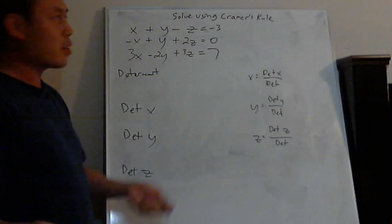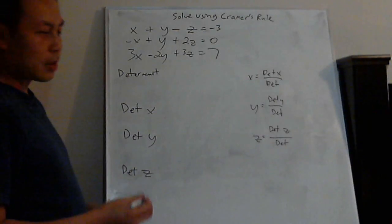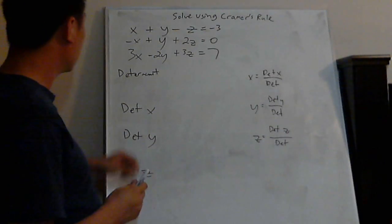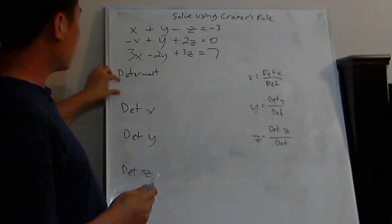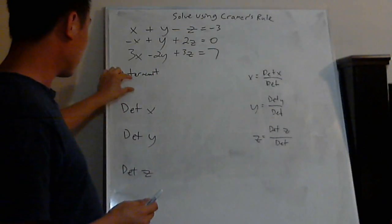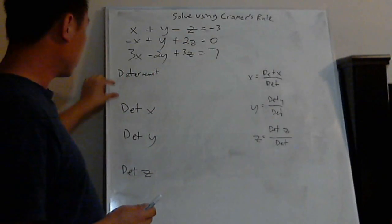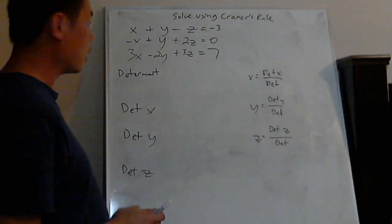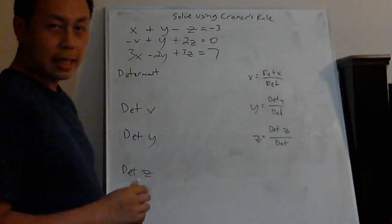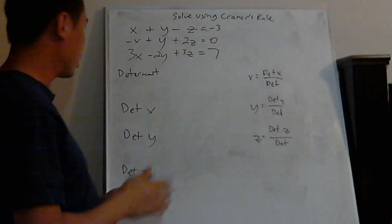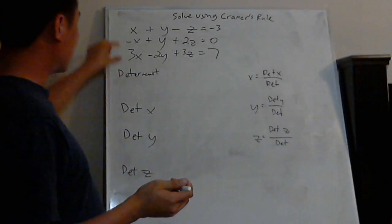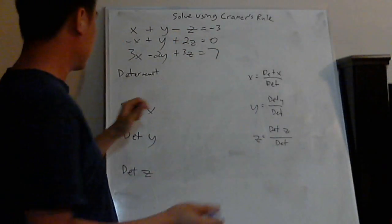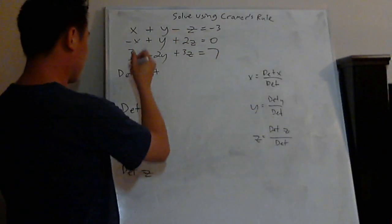The hardest part is finding the determinants. Let's put everything into 3x3 matrices for the main determinant, determinant x, determinant y, and determinant z. The easiest way to remember this is that the main determinant is always the coefficients for the x's, y's, and z's. So let's just copy those.